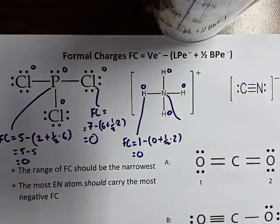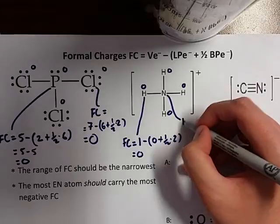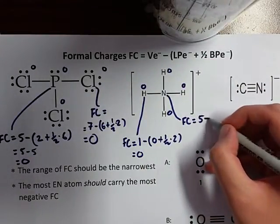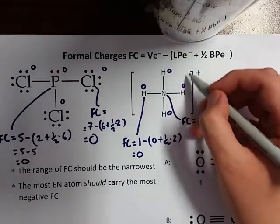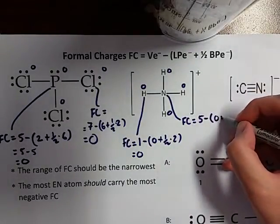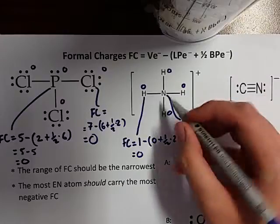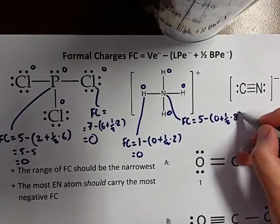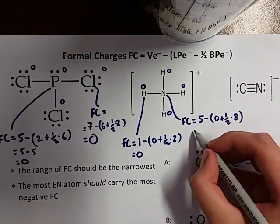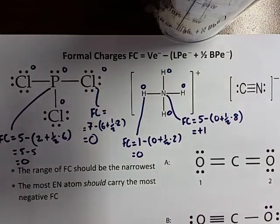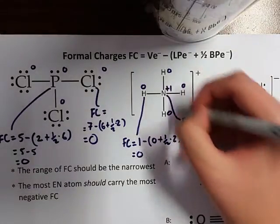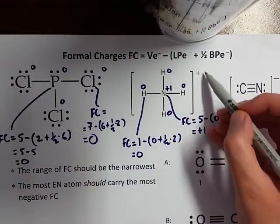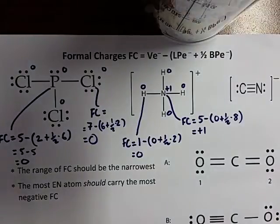What about the formal charge for nitrogen? Nitrogen's formal charge equals valence electrons — five — minus lone pair electrons, which it doesn't have any, plus half the bonding pair electrons. How many bonding electrons are shared around the nitrogen? There are eight of them. Five minus four gives you a positive one formal charge. Zero plus zero plus zero plus zero plus one gives us the overall charge on the molecule.